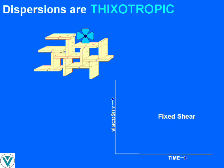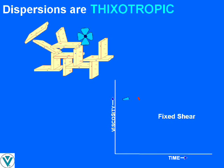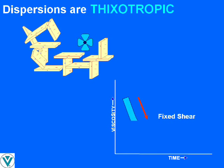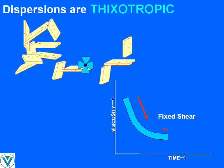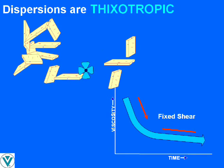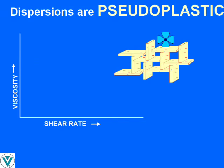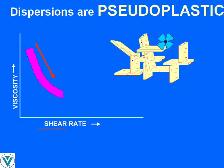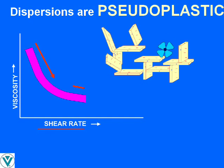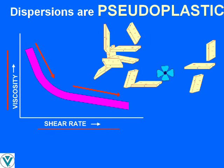Conversely, when a fixed shear is applied, most of the structure is disrupted quickly, with subsequent breakdown becoming more gradual. Smectite dispersions are also pseudoplastic, because increasing the rate of applied shear, thereby increasing structure breakdown, results in decreasing viscosities.